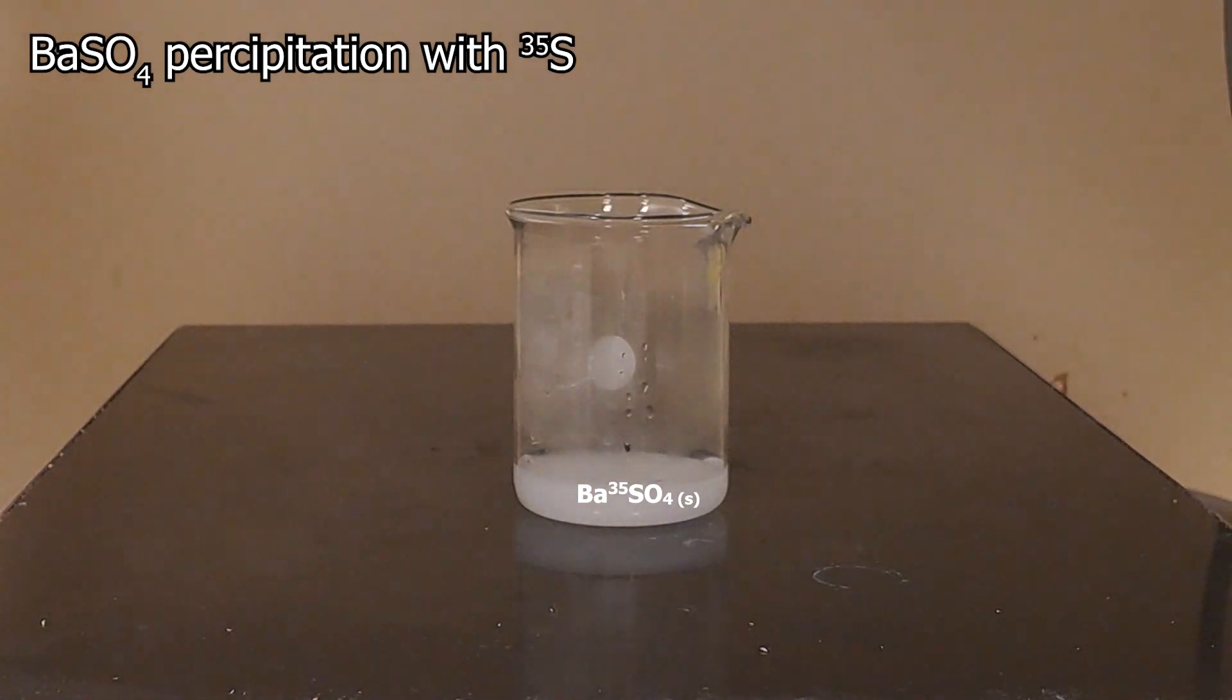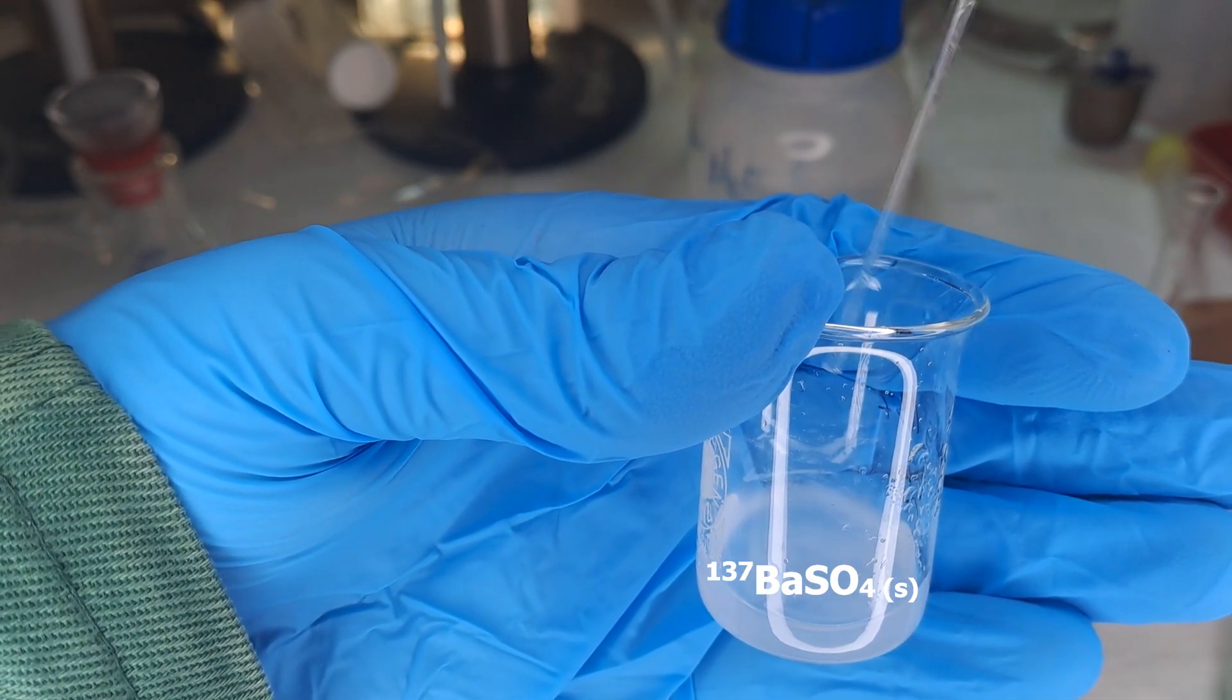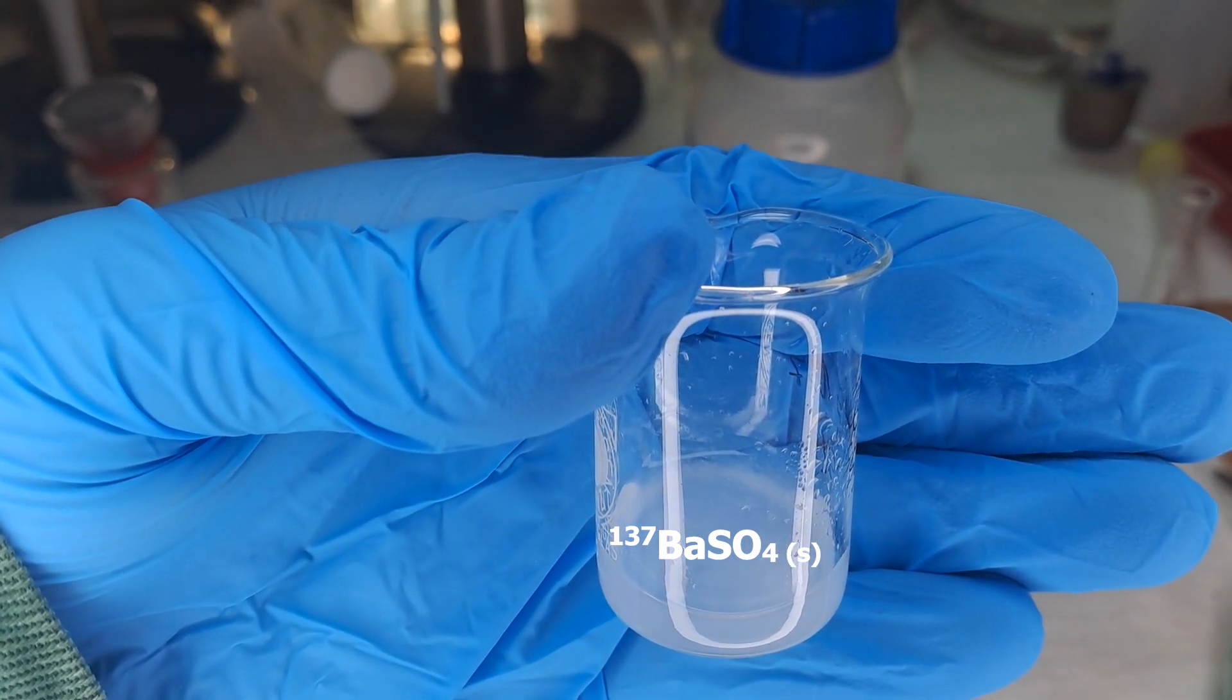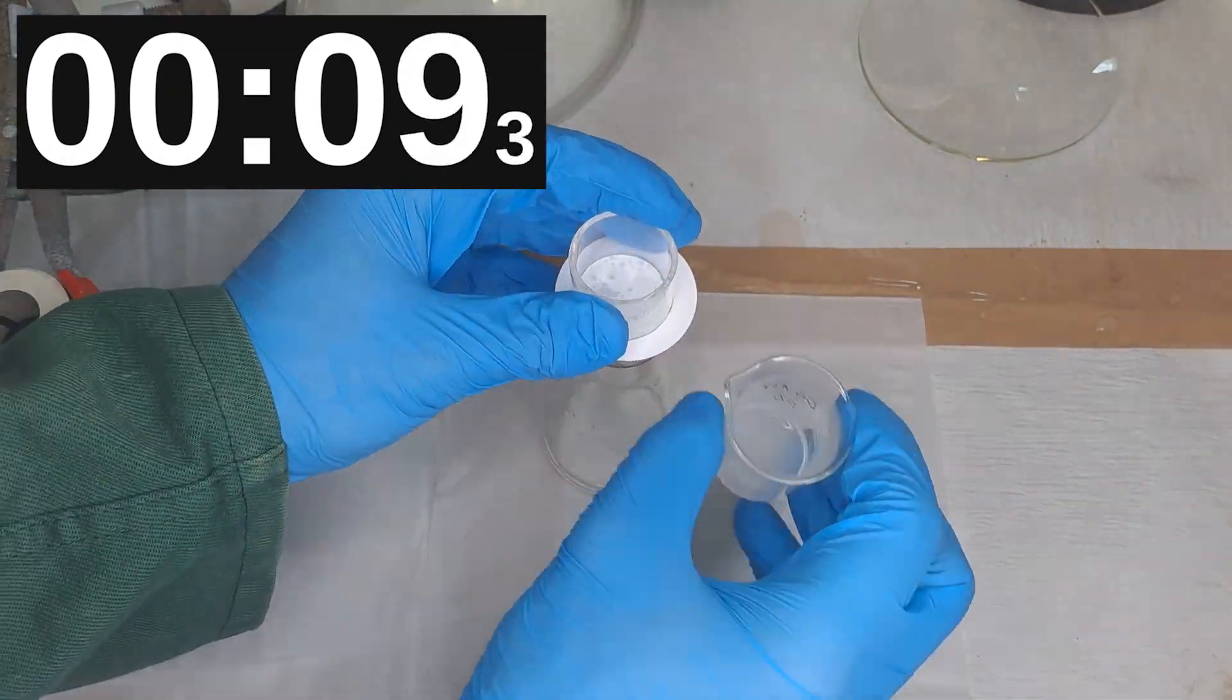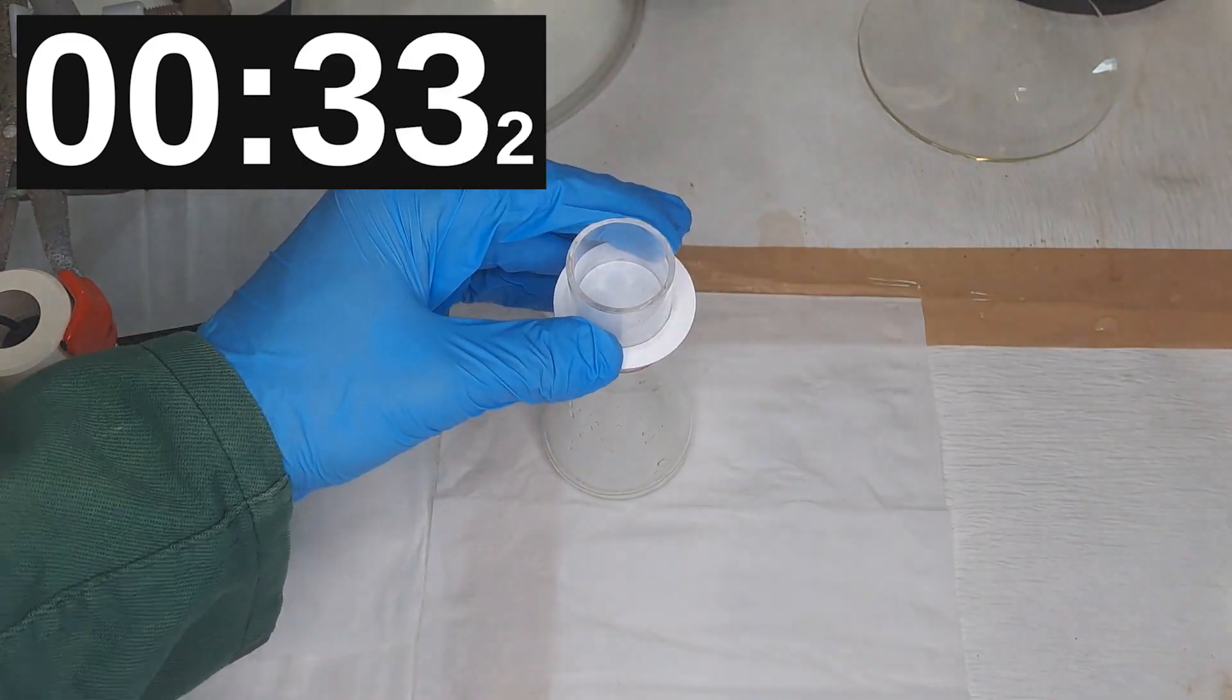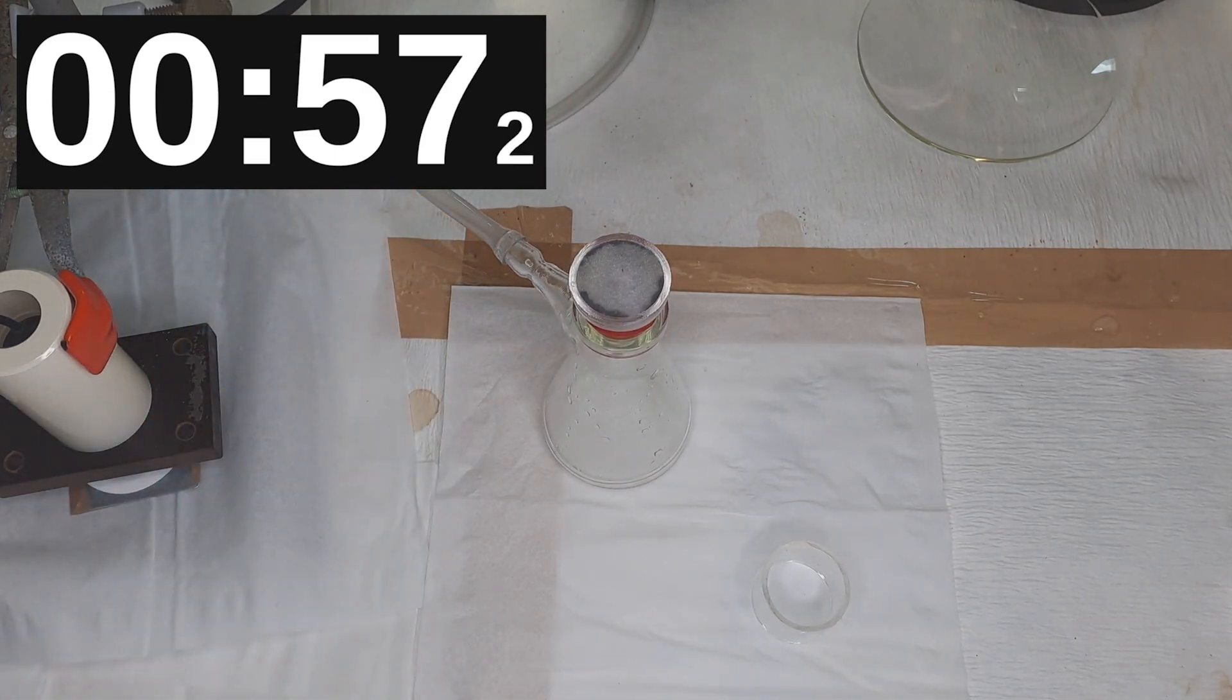Why do we do this? Well, with the sulfur-35, we realize that if the solution isn't heated, you get a much finer precipitate. So fine that it sometimes passes right through the filter paper. This is why heating is used to create clumps of barium sulfate. This is great for filtration, but bad for separating out the cesium-137, because the otherwise water-soluble cesium can get trapped in these clumps and end up in the filtrate.